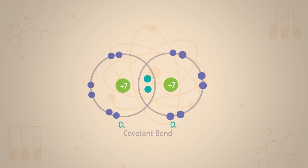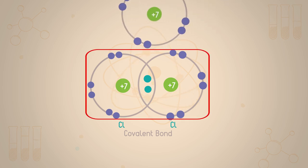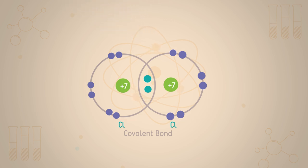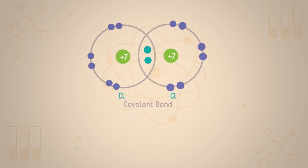If a third chlorine atom approaches, there is no room for its electron in the outer shell of the atoms already there, so it is unable to bond. Thus chlorine, the element, exists as a set of independent diatomic molecules.